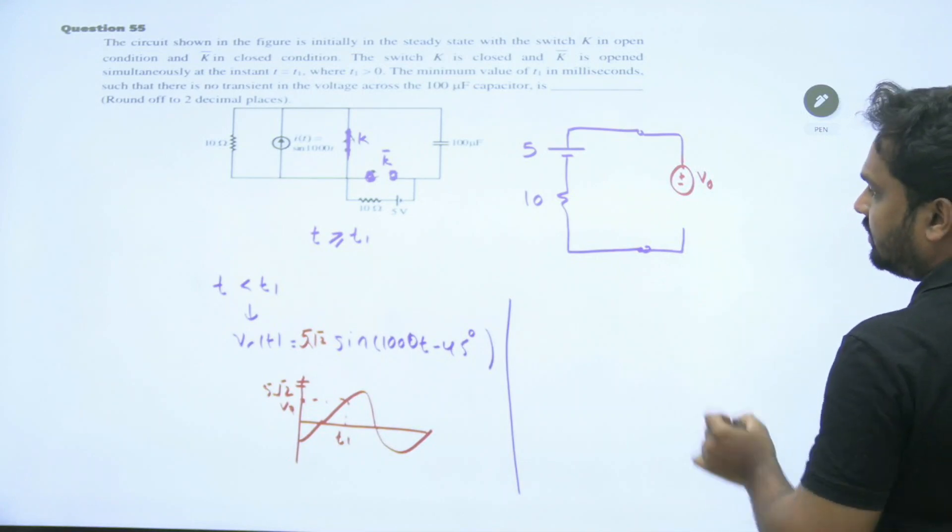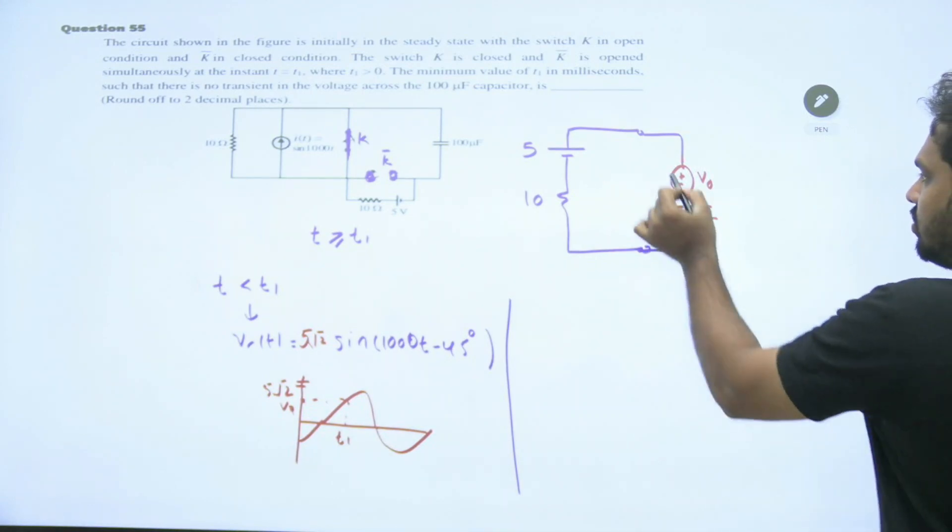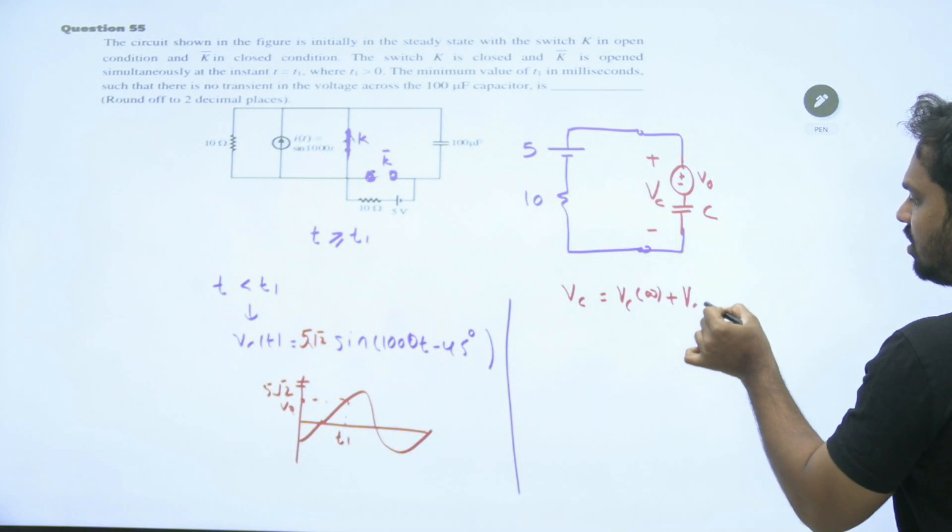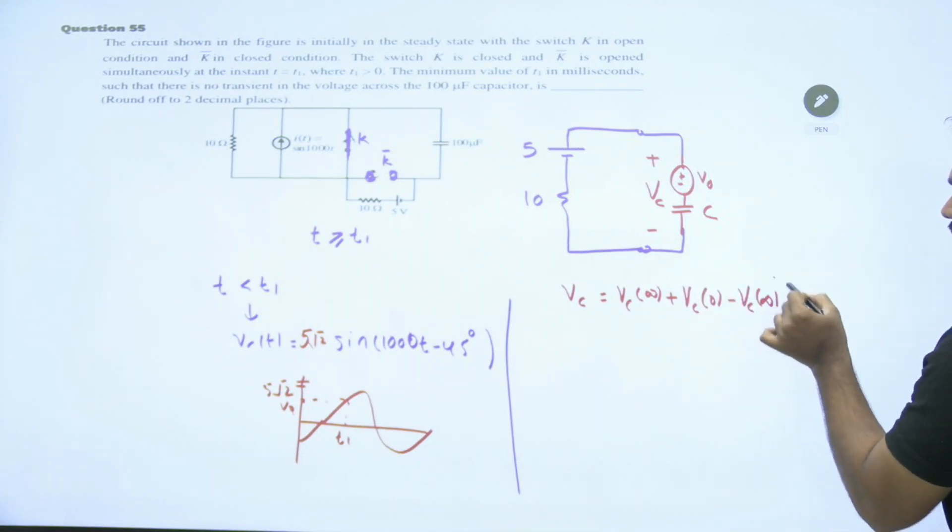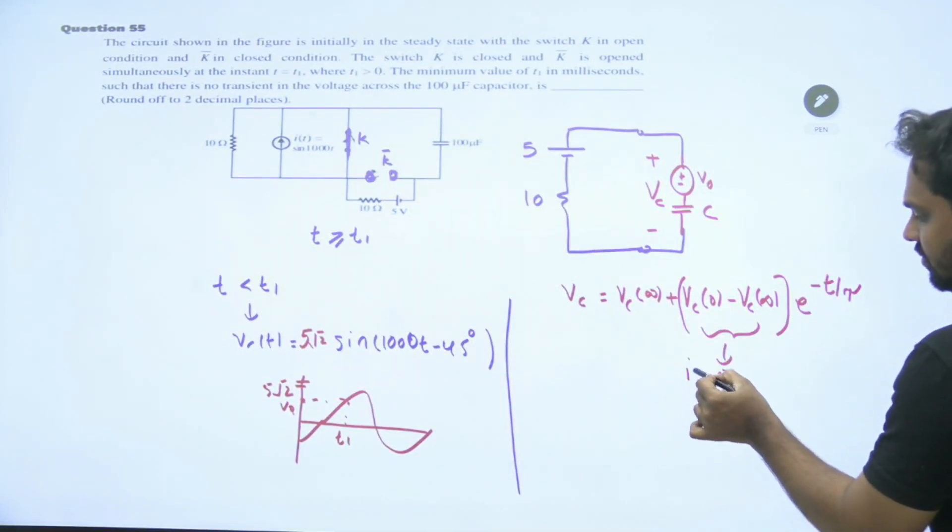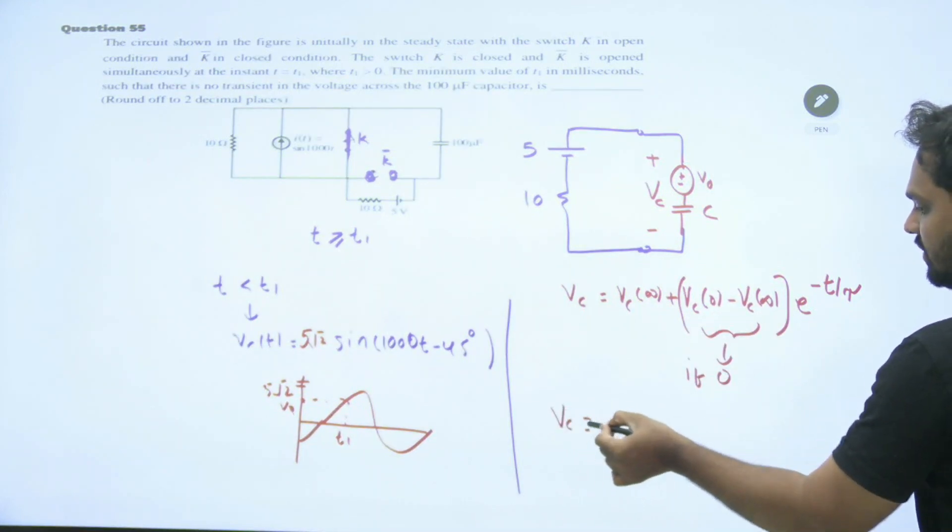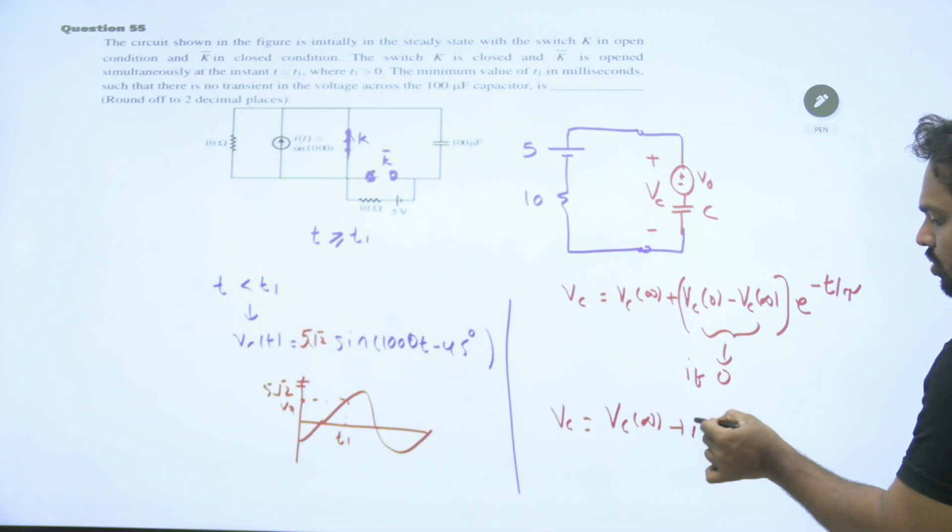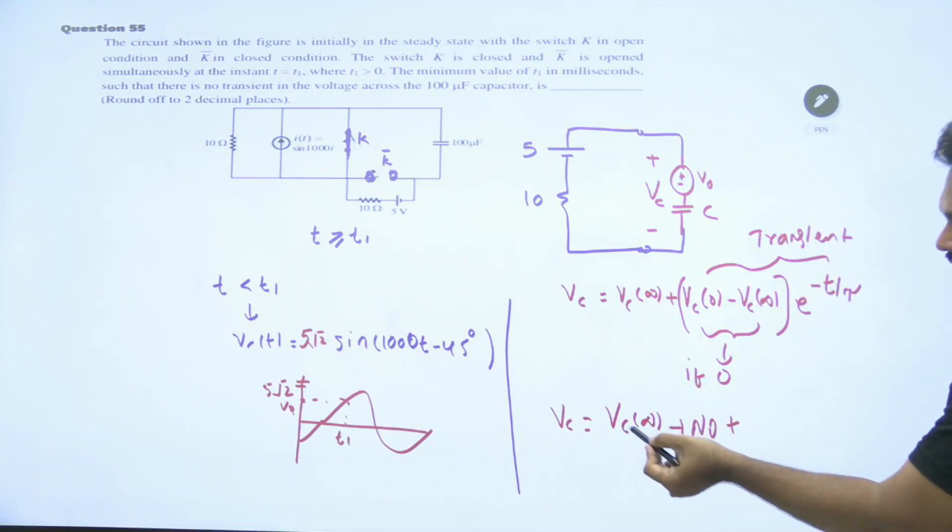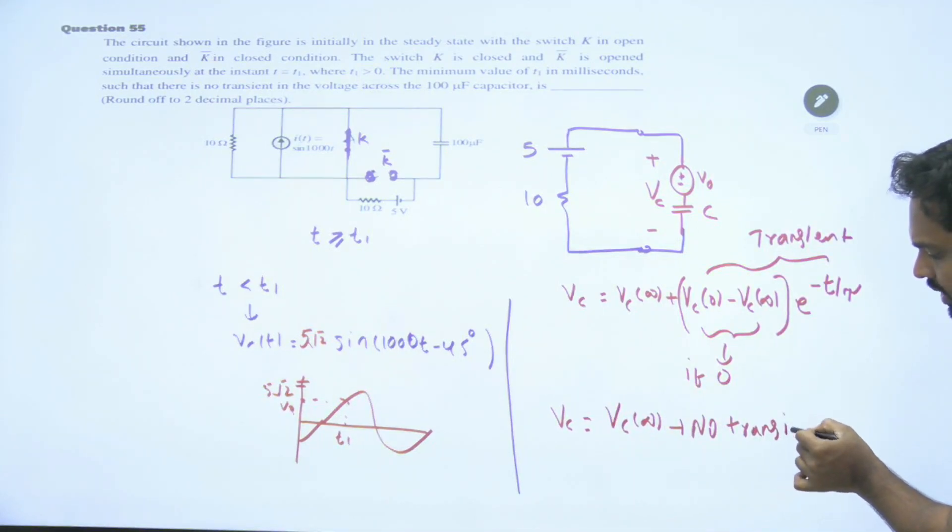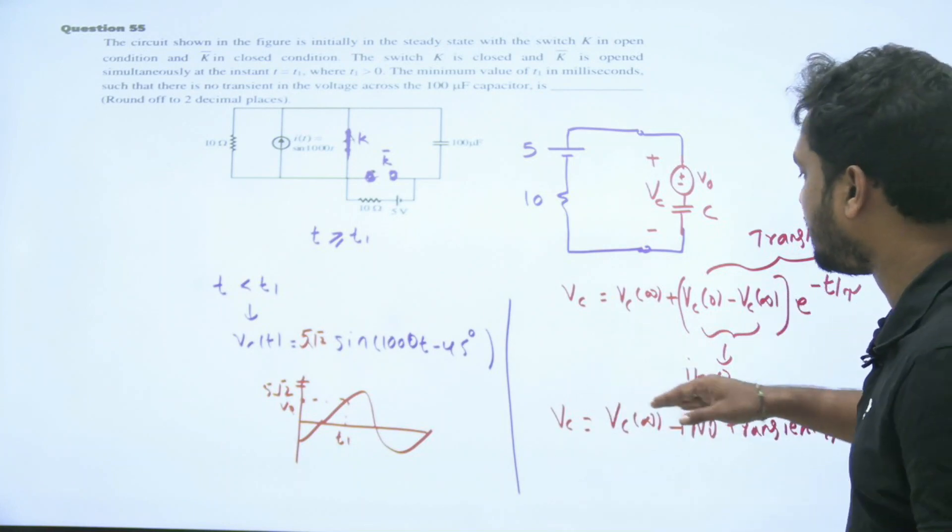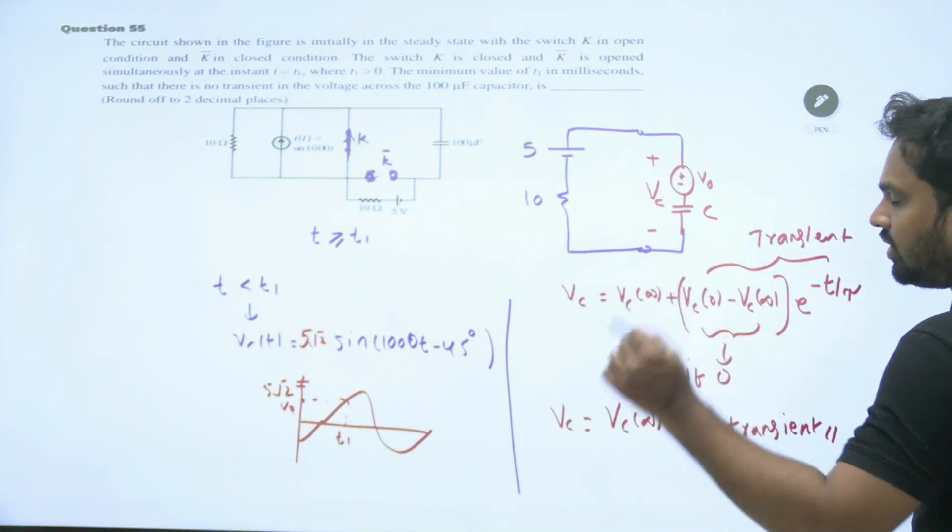What is that voltage V naught? And the capacitor now, what is the formula for VC? VC of infinity plus VC of 0 minus VC of infinity e^(-t/tau). If this part is equal to 0, then if this part is 0, VC equal to VC of infinity, there is no transient.